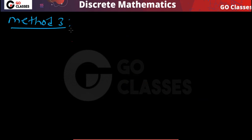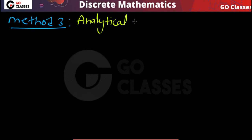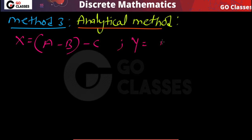Now let's see Method 3 — the analytical method. This method will improve your knowledge but takes more time, so in the Gate exam you should apply the Venn diagram or Method 2. However, during preparation you should always study the analytical method. Here, X is A minus B minus C and Y is (A minus C) minus (B minus C).